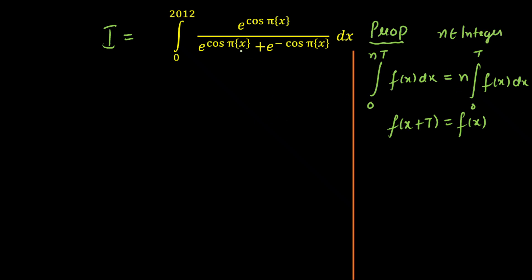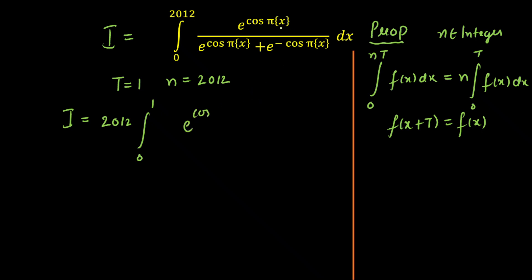Now here I can see fractional part of x is present. That means this function is periodic with period 1. So the period T equals 1 for this function, and automatically n will become 2012. Now the value of the integration will be equal to — I can take 2012 outside — and we have integration from 0 to 1. We have e raised to power cos of...